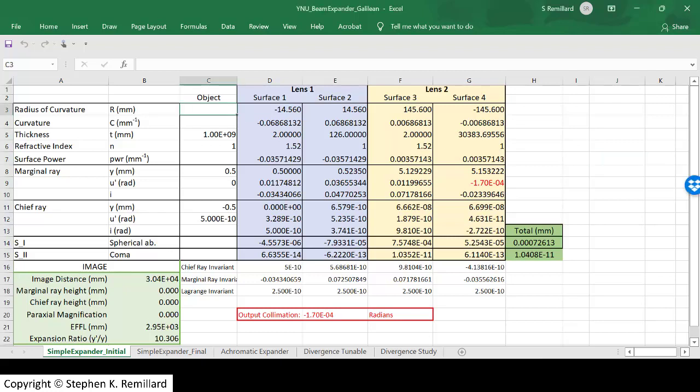Column C is the object column, and I set the thickness to a billion so that the object can be at infinity, and the refractive index is 1 because it's air.